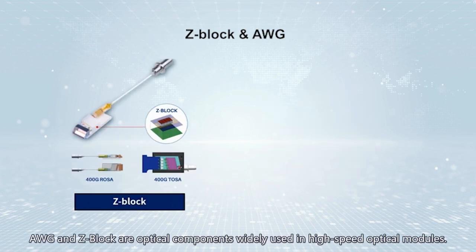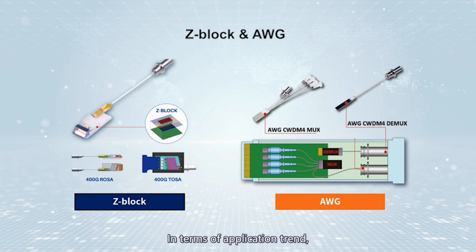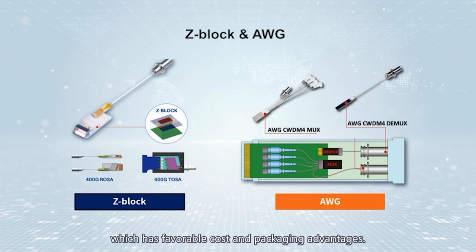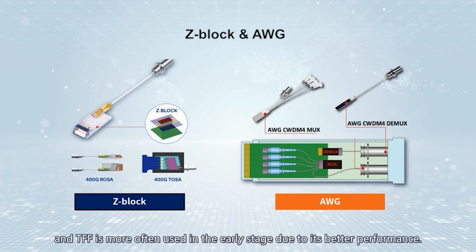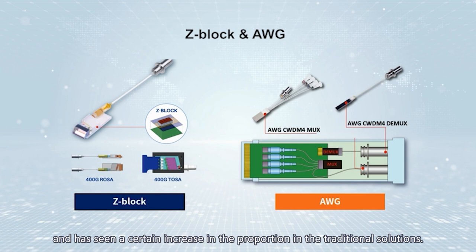To simplify the packaging process, reduce size and cost, the industry developed the CWDM AWG chip based on integrated optical technology. AWG and Z-block are optical components widely used in high-speed optical modules. In terms of application trend, AWG is more widely used on the receiver side of traditional optical modules, which has favorable cost and packaging advantages. On the transmitter side, there are two solutions: AWG and TFF. TFF is more often used in the early stage due to its better performance. However, considering cost and performance comprehensively, AWG's performance can also meet requirements and has seen an increasing proportion in traditional solutions.